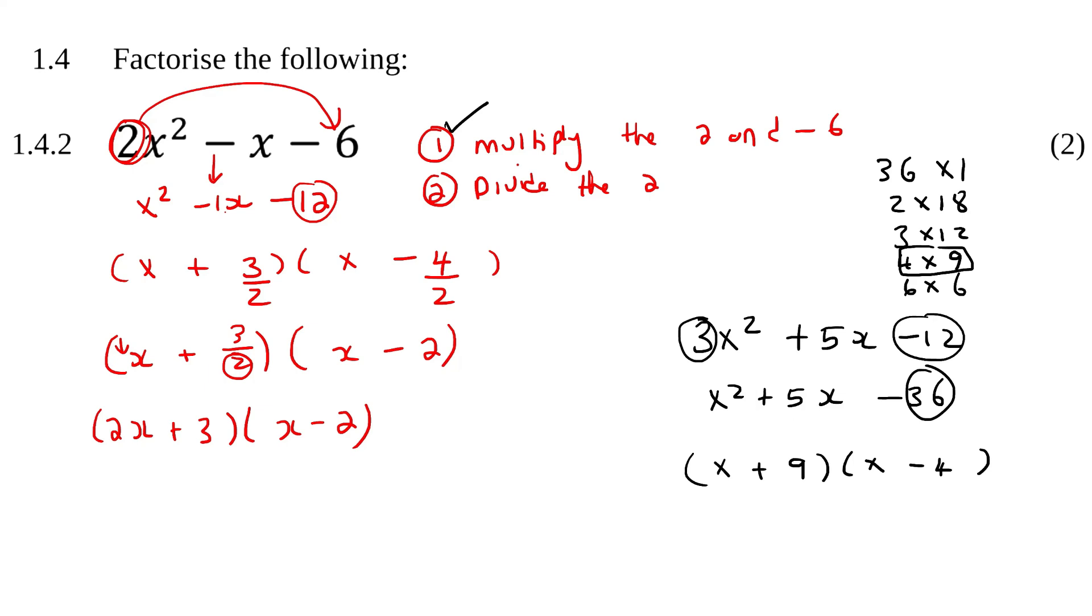By making it positive 9 and negative 4 because 9 minus 4 is 5. Now, because we multiplied by 3 earlier, now we need to divide by 3. So we're going to divide this one by 3 and we're going to divide this one by 3.